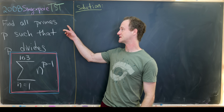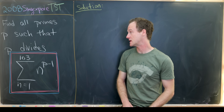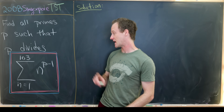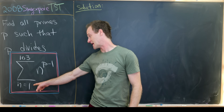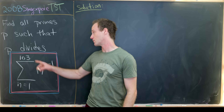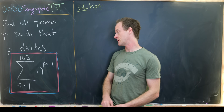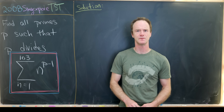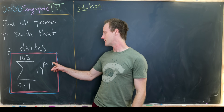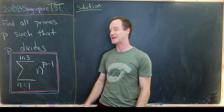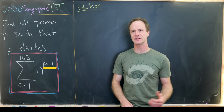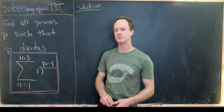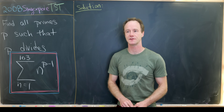Our goal is to find all primes p such that p divides the sum as n goes from 1 to 103 of n to the p minus 1. The fact that we've got p minus 1 in the exponent really screams that we should use something called Fermat's Little Theorem, so we'll review that.